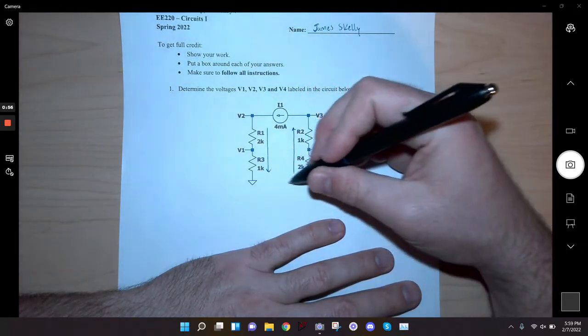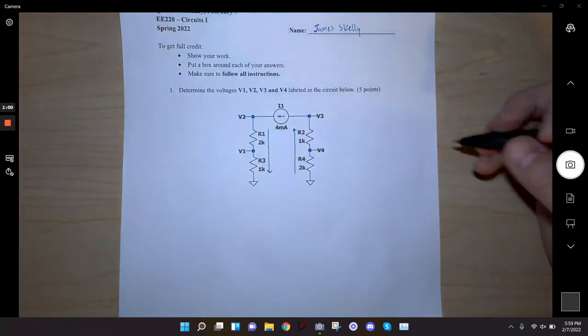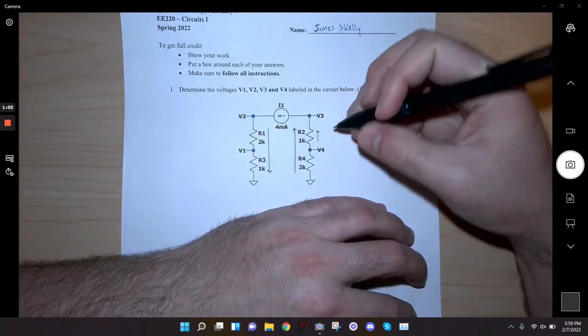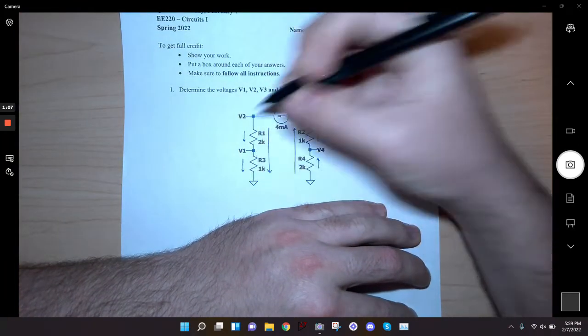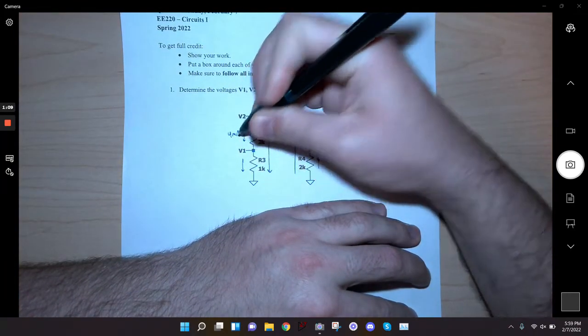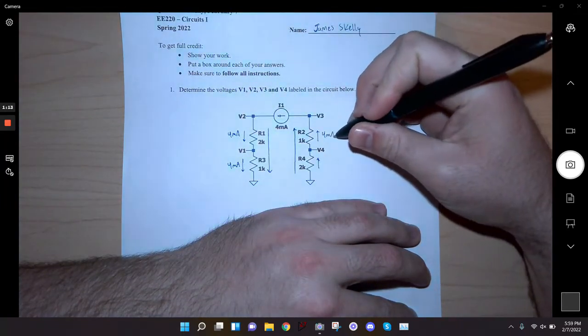Right off the bat we know the current flowing through all four resistors. This is 4 milliamps, this is 4 milliamps, this is 4 milliamps, and this is 4 milliamps.